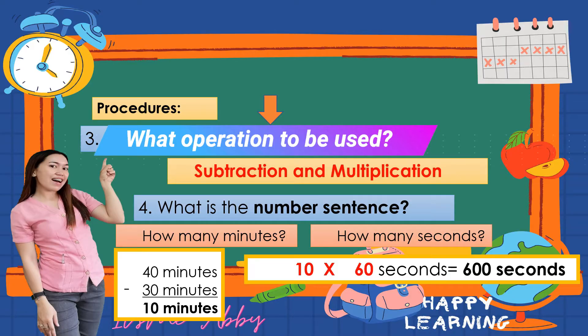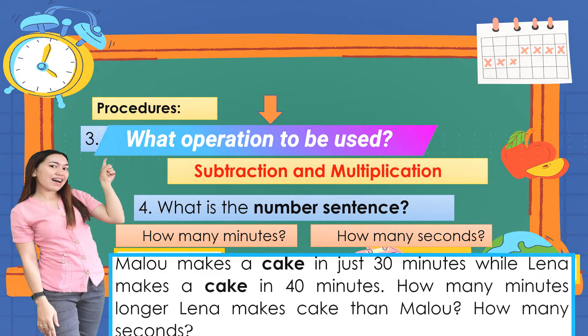To convert minutes to seconds, we multiply by 60. So 10 times 60 equals 600 seconds — there are 600 seconds longer that Lena takes to make a cake than Malou. Did you get it, kids?